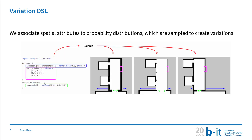The Variation DSL allows us to model probability distributions which are later sampled to create the variations of the environment. For instance, here you can see three different probability distributions which we use to create variations on the thickness of the walls, the width of the entryway, and the position of the corridor.